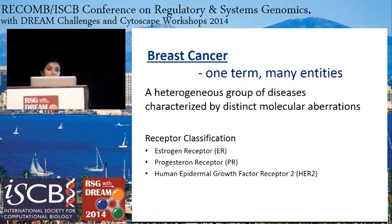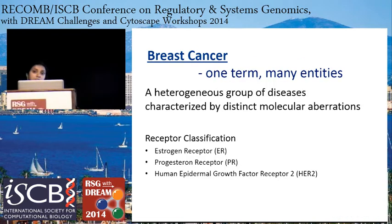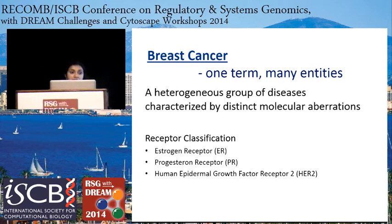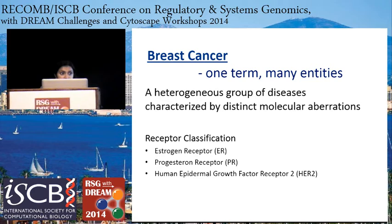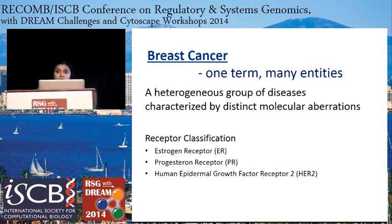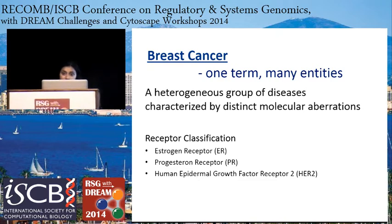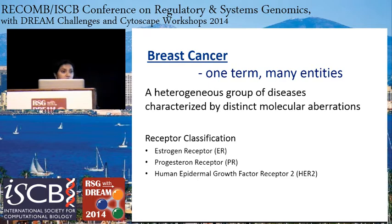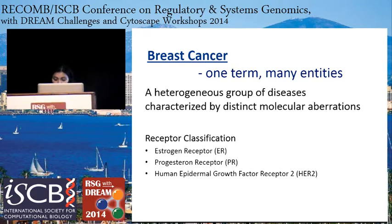Breast cancer — it's one term, but it has many entities. It's a heterogeneous group of diseases that are characterized by distinct molecular aberrations. Traditionally in the clinic, breast cancer is classified based on three independent receptors: the estrogen receptor and the progesterone receptor, which are the hormone receptors, and the human epidermal growth factor receptor, HER2.